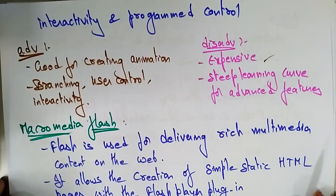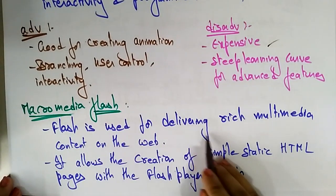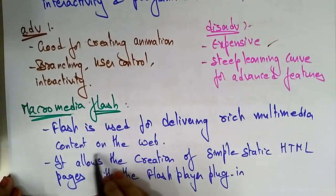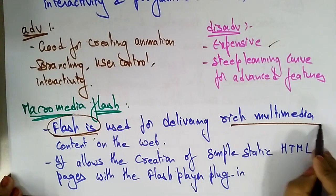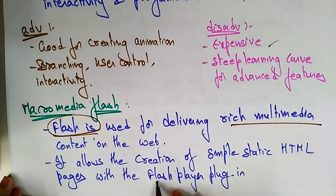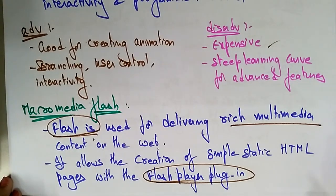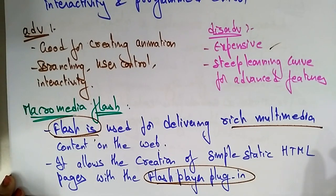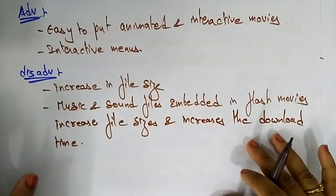Now let's look at another software in the time-based tools category — Macromedia Flash. Flash is used for delivering rich multimedia content on the web. It also allows the creation of simple static HTML pages when the Flash Player plugin is installed in the system.